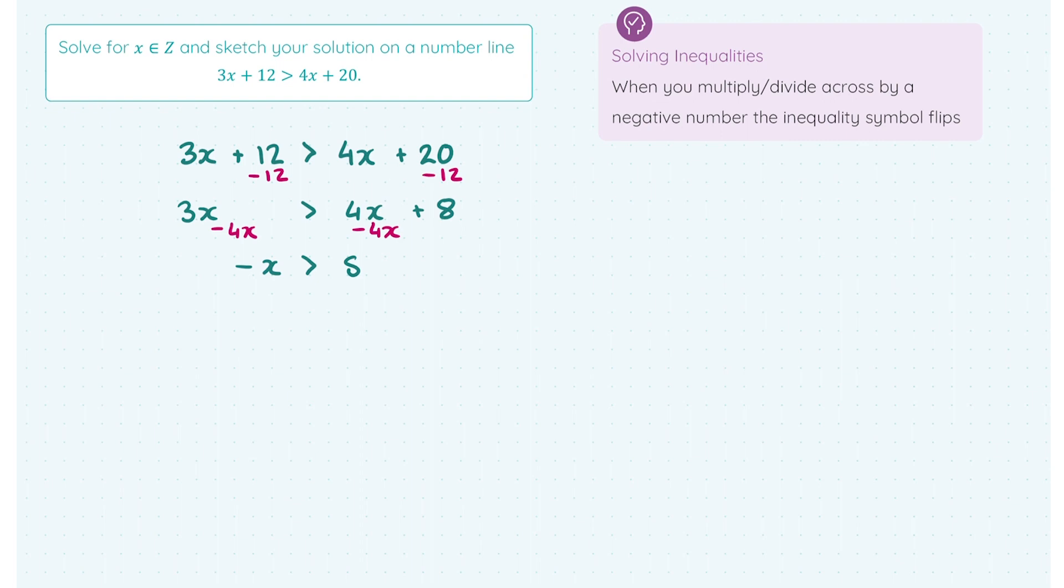You can see here I'm at a point where I have -x > 8. Now I know most people will think we need to get x on its own here, so I have to divide across by -1. And you're dead right. We do have to divide or multiply across by -1 here. But when we do that, we need to pay attention to the one and only rule we need to learn about inequalities. And that is when you multiply or divide across by a negative number, the inequality symbol flips. It changes direction. So watch what happens here.